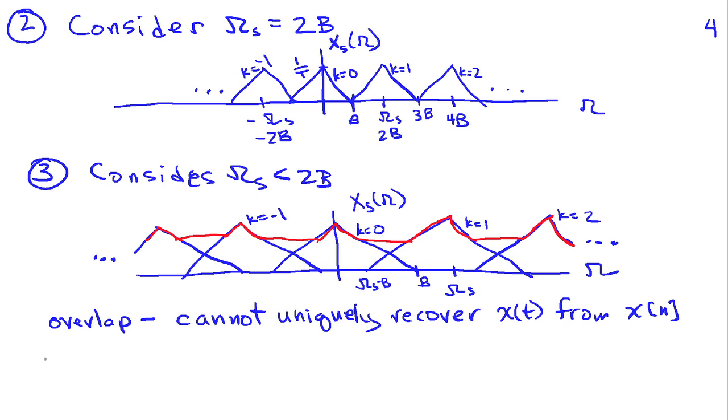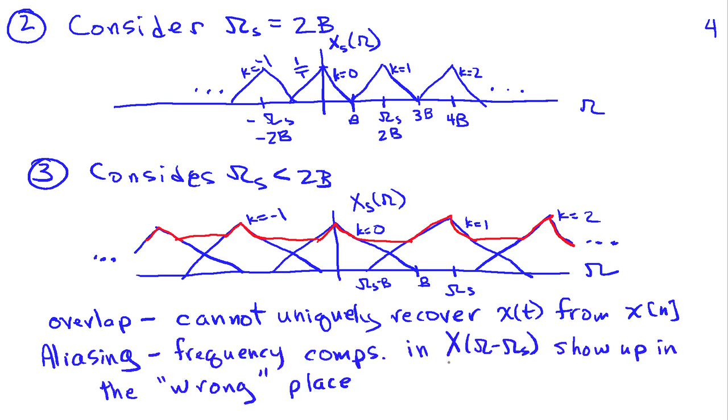Now, this is called aliasing because frequency components in the shifted replicate, and I've just written down here X(ω - ωs), it shows up in the overlapping with the higher frequencies of X(ω). In other words, it shows up in the wrong place, so we call that aliasing. So, this leads us to the sampling theorem, also sometimes called the Nyquist theorem.